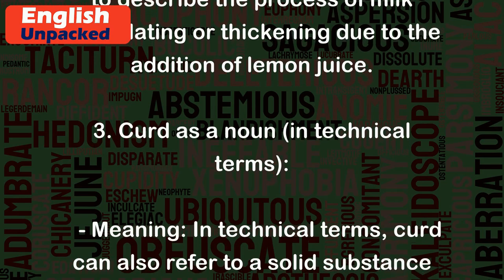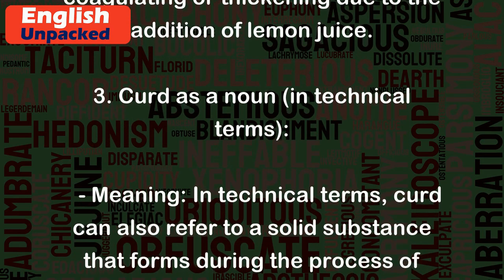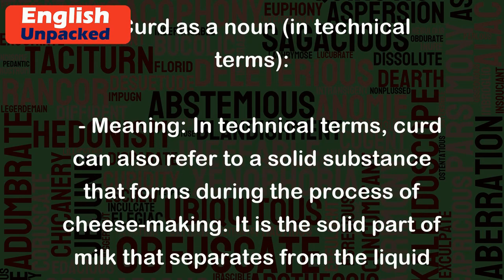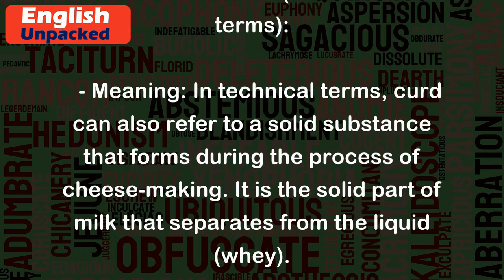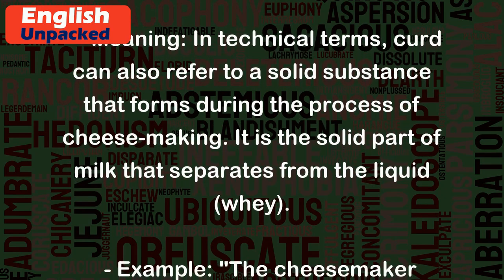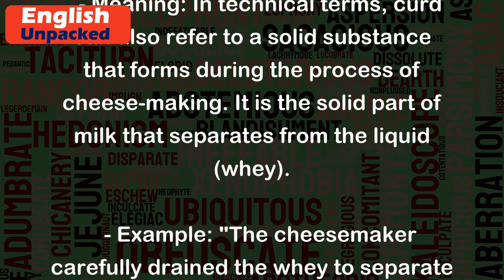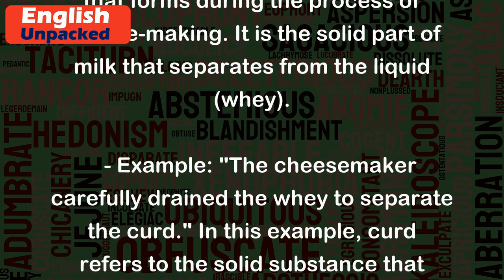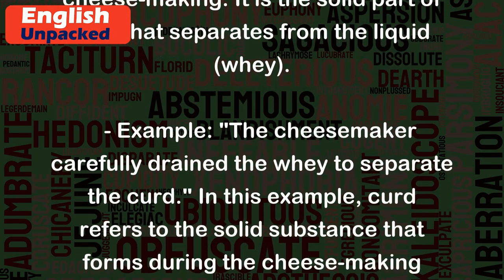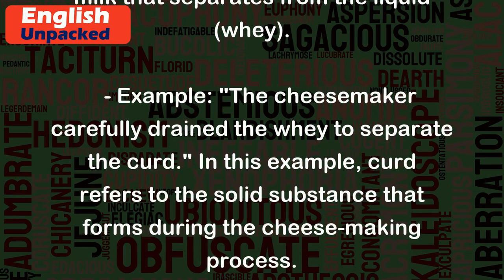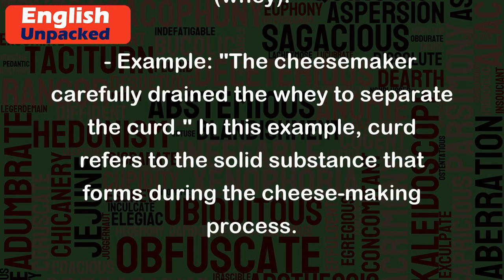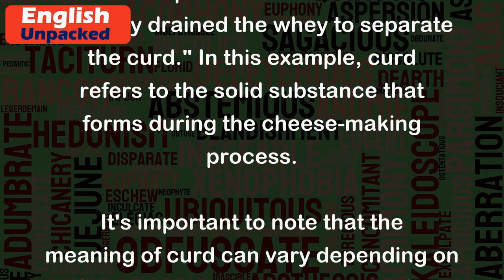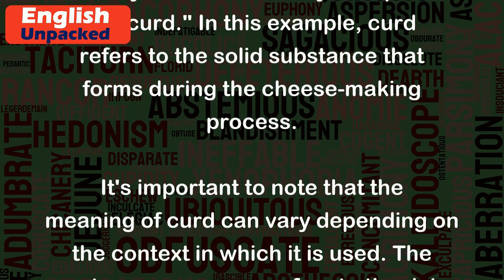3. Curd as a noun in technical terms. Meaning: In technical terms, curd can also refer to a solid substance that forms during the process of cheesemaking. It is the solid part of milk that separates from the liquid, whey. Example: 'The cheesemaker carefully drained the whey to separate the curd.' In this example, curd refers to the solid substance that forms during the cheesemaking process.